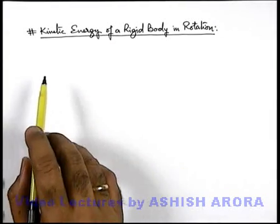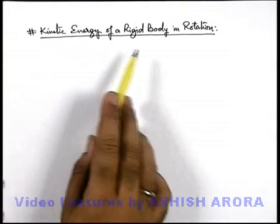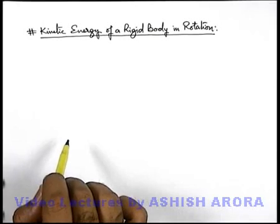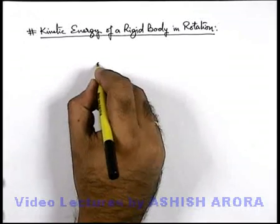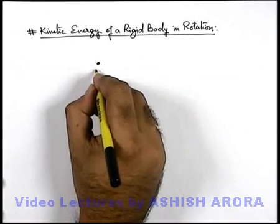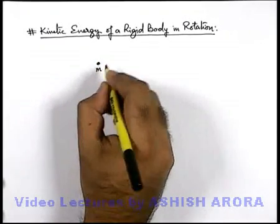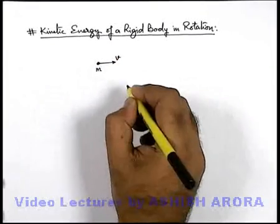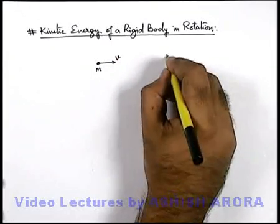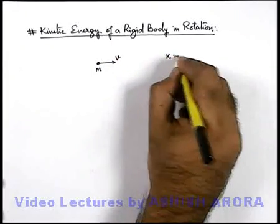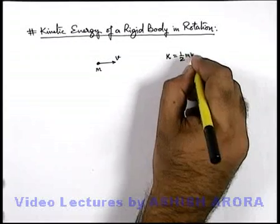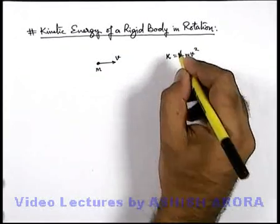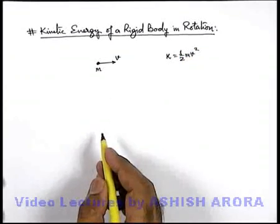Now we'll discuss about kinetic energy of a rigid body in rotation. As we already know that for a particle of mass m, if it moves at a speed v, its kinetic energy we can write as half m v square. That is the energy associated with the motion of the particle.